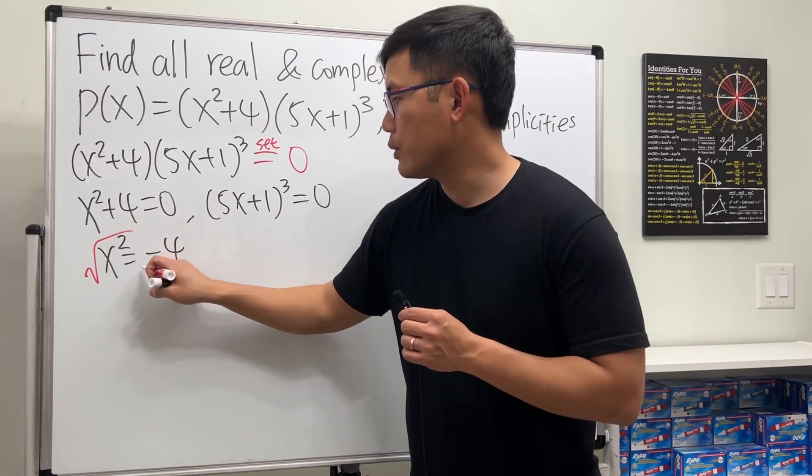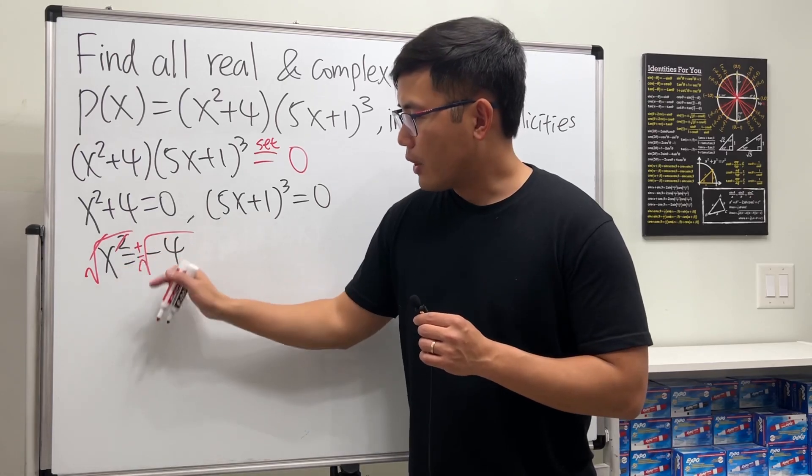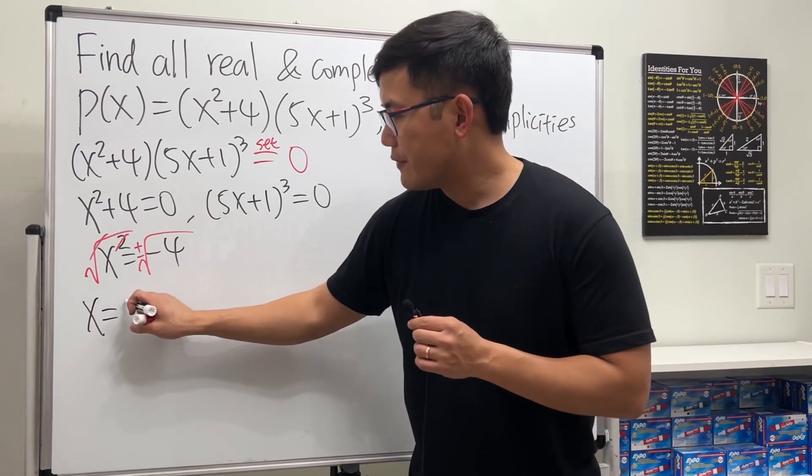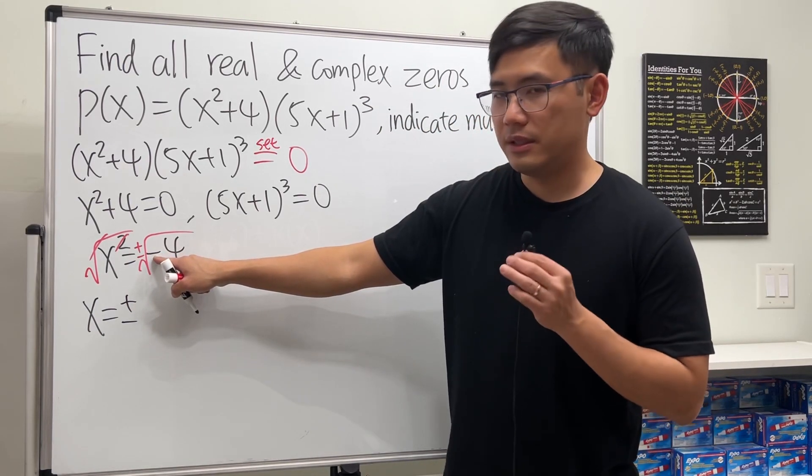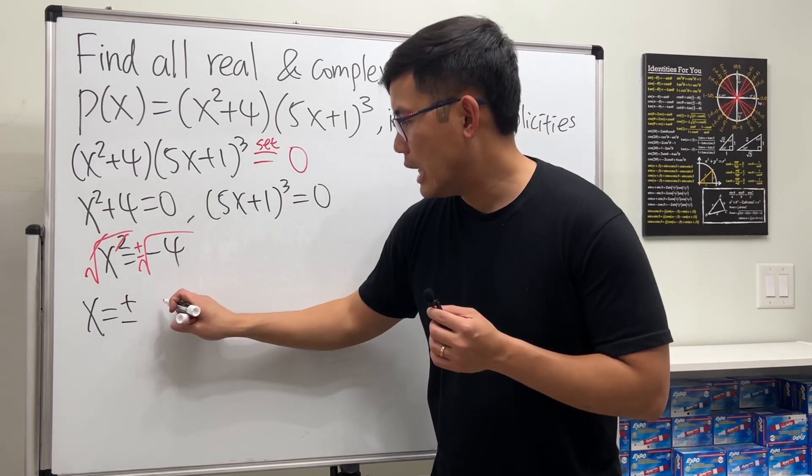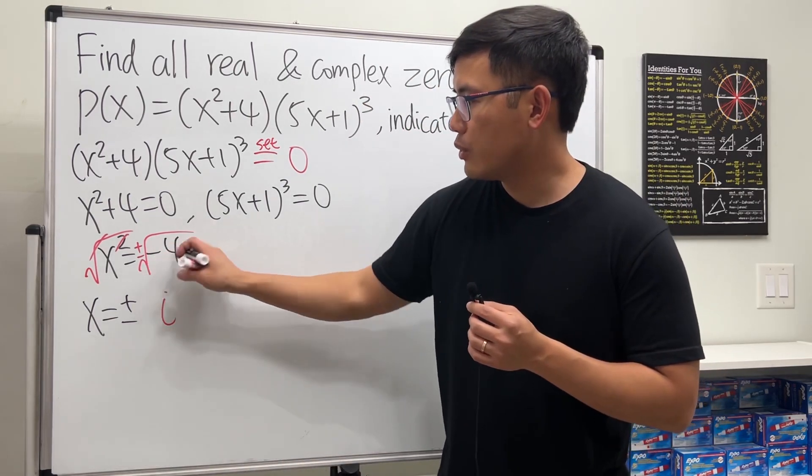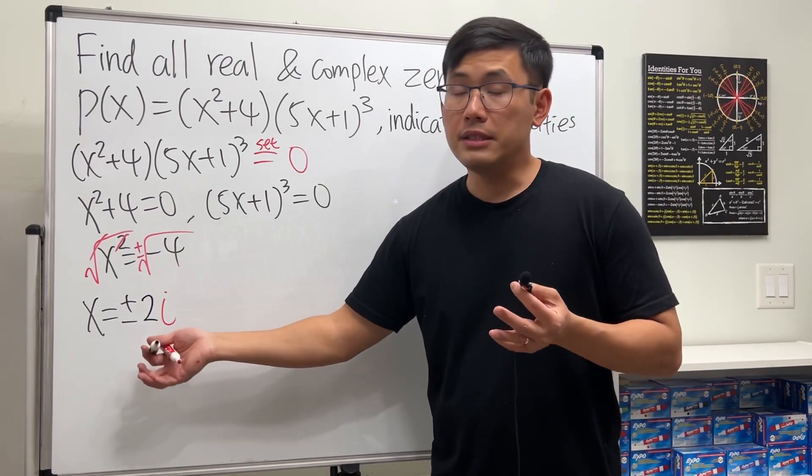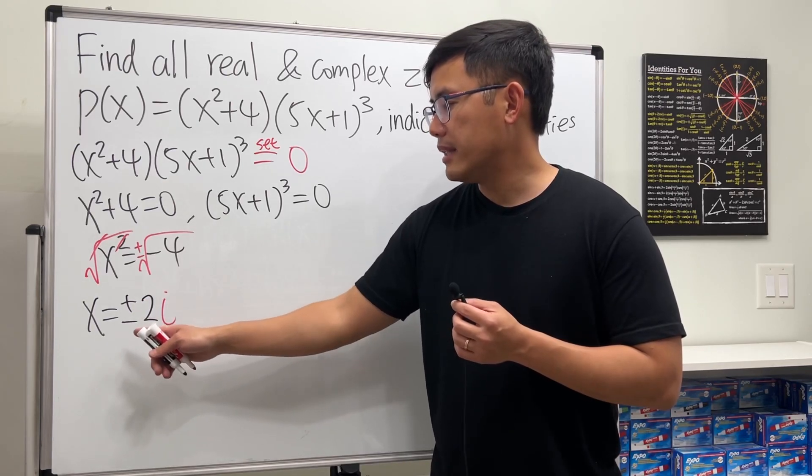This and that cancel, and don't forget to include a plus or minus. From here we actually get x is equal to—we have two solutions here—plus or minus, and because we have the negative inside of the square root we get a complex unit here, imaginary unit here, and then square root of 4 is 2. So this is the complex zero—these are the complex zeros, technically, because there are two of them: 2i and negative 2i.